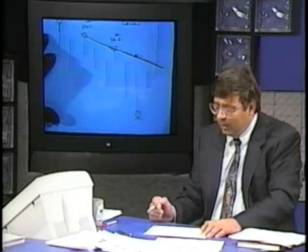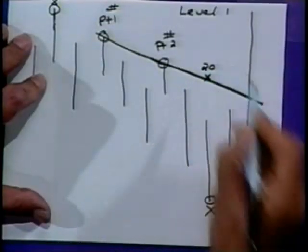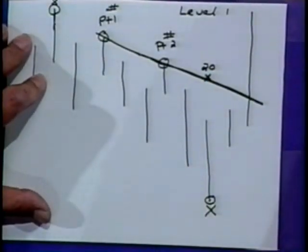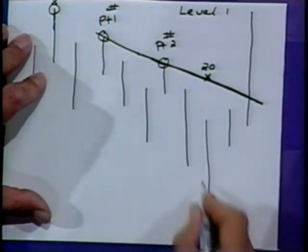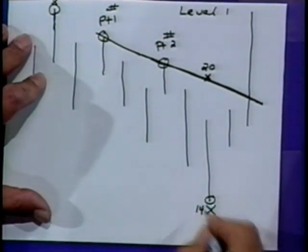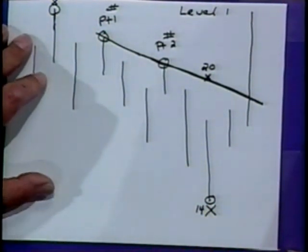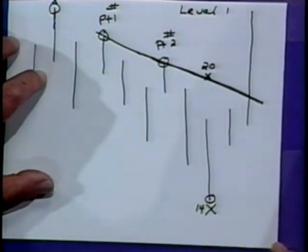To simplify things: say the value on that particular trend line is 20, and the deepest price low is 14 — XYZ stock, with a lot of volatility. Say there was some news, prices got hit pretty badly, it was way overdone — whatever the excuse was.